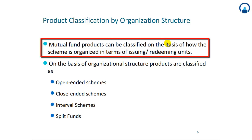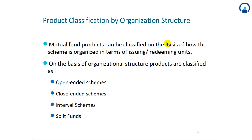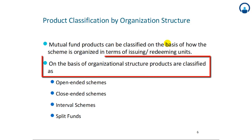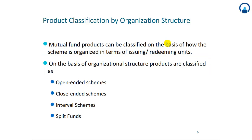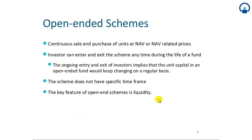Mutual fund products can be classified on the basis of how the scheme is organized in terms of issuing and redeeming units. On the basis of organizational structure, products are classified as: 1. Open-ended schemes, 2. Close-ended schemes, 3. Interval schemes, and 4. Split funds. These will be covered in further detail during problem solving.